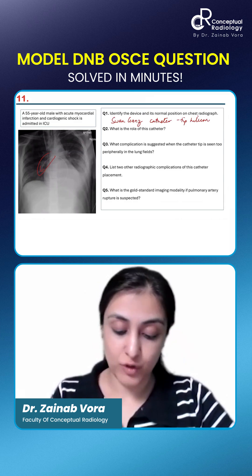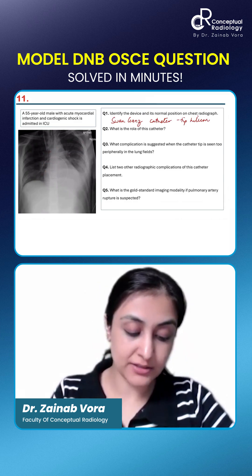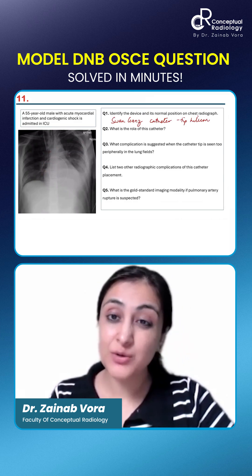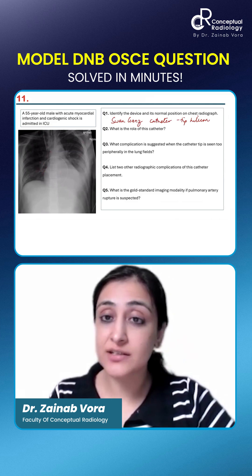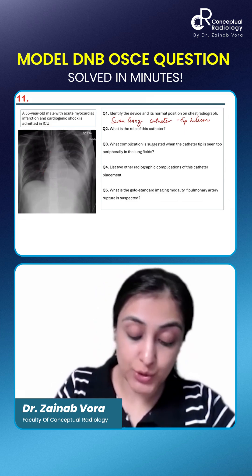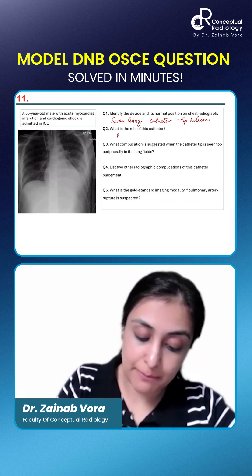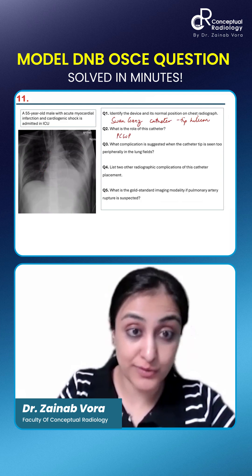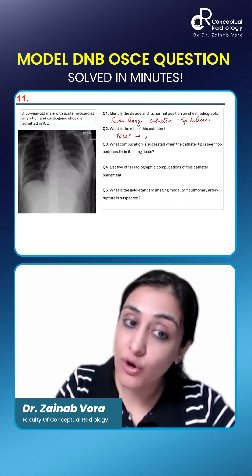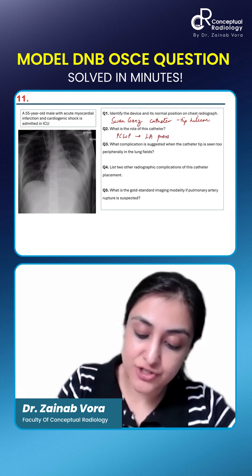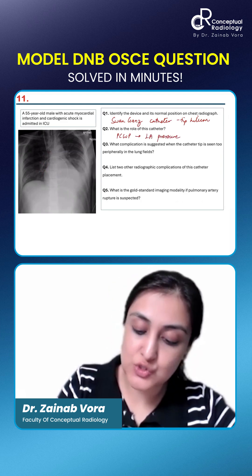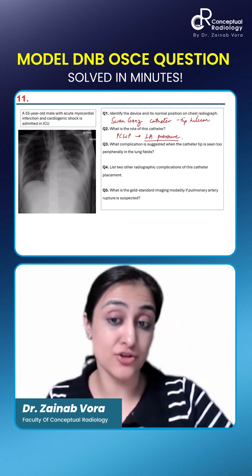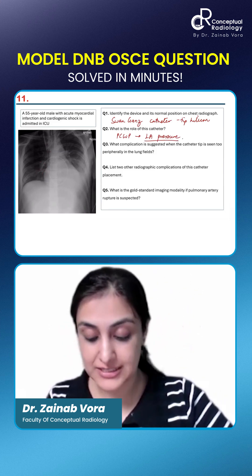Then what is the role of this catheter? Why do we put a Swan-Ganz catheter? Why do we want to put a catheter in the pulmonary artery? This is the best estimate of pulmonary capillary wedge pressure, which is the best estimate of left atrial pressure. This is what helps us distinguish the grades of cardiogenic pulmonary edema.